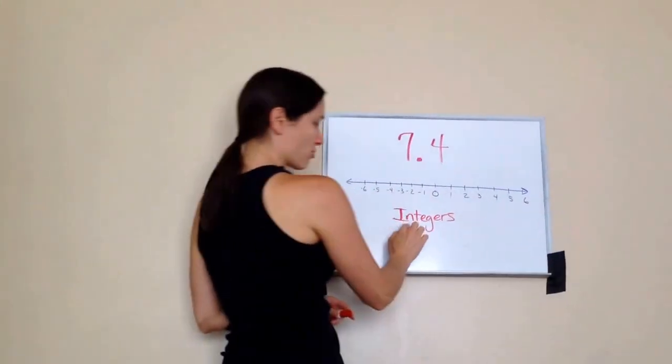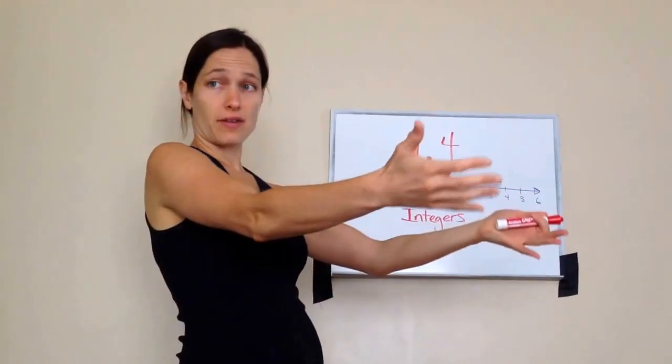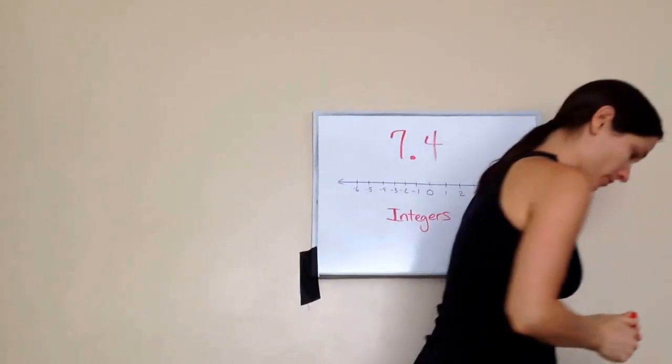So what integers are are counting numbers. See, I counted 1, 2, 3, 4, 5, 6, 7, and their opposites: negative 1, 2, 3, 4, 5, 6, 7, with zero being our origin.